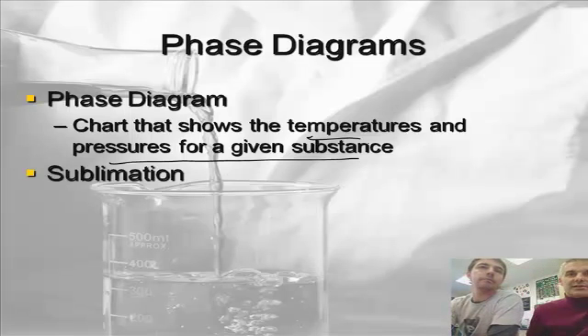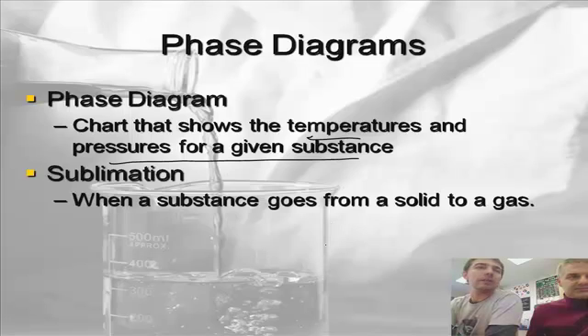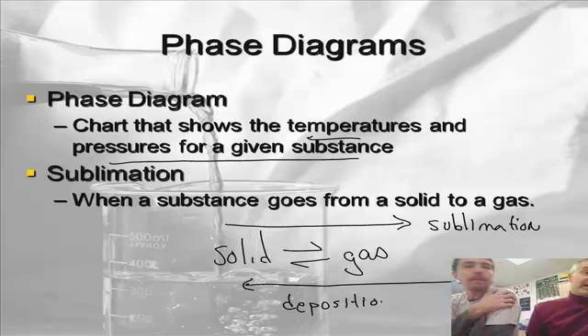There's a term we haven't defined yet, and that's called sublimation. We need to talk about this real fast. Sublimation is when a substance goes from a solid to a gas, and it doesn't pass through the liquid phase. It goes directly from a solid to a gas. If you've ever played with dry ice, you'll notice you have a chunk of solid, and then it just turns into vapor and it never goes through the liquid phase. That's why it's called dry ice. It's not really ice. It's actually frozen carbon dioxide. But it's called dry because it doesn't go through the liquid phase and make things wet. That's correct.